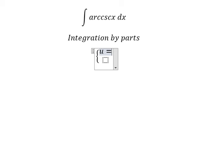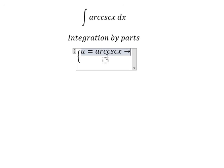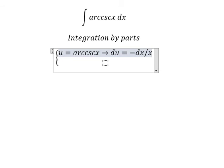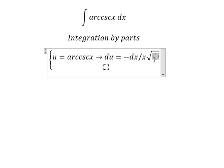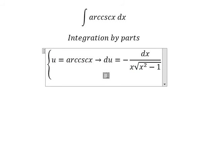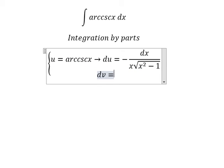We set u equals to cosecant of x. If we take the first derivative of both sides, we get du equals to negative dx over x multiplied by the square root of x squared minus one. And for dv, we have dx, so integrating gives us v equals to x.